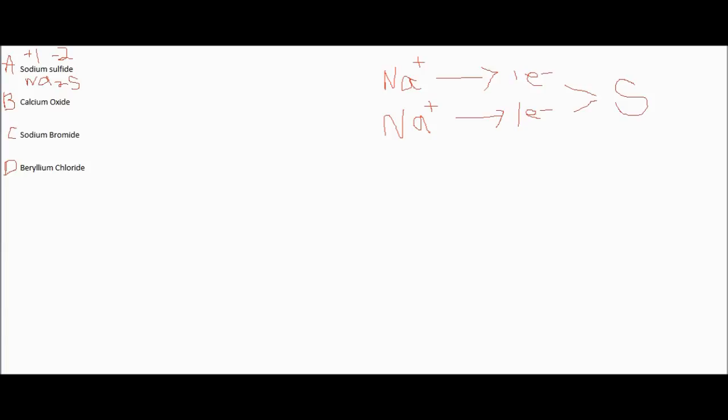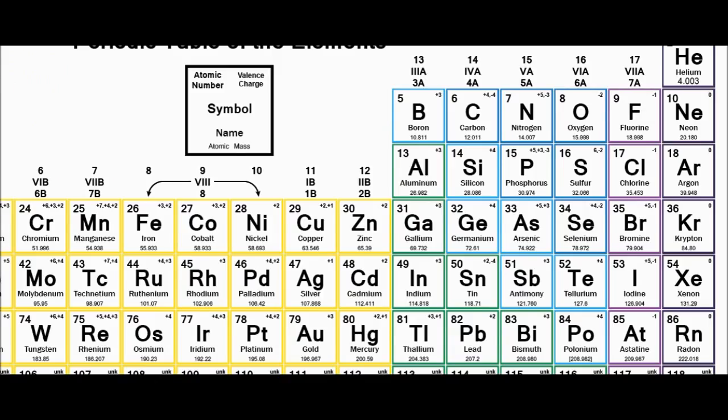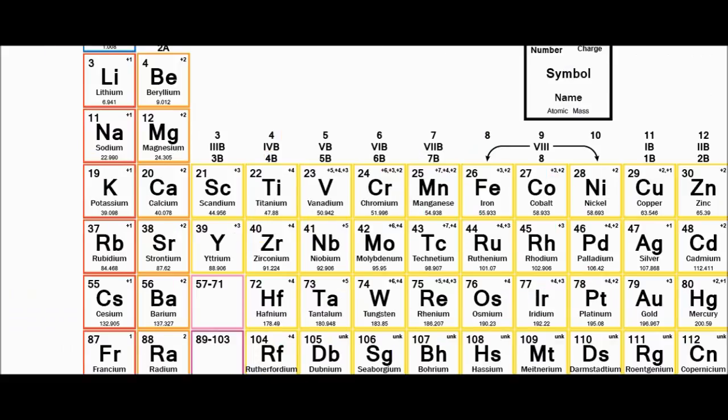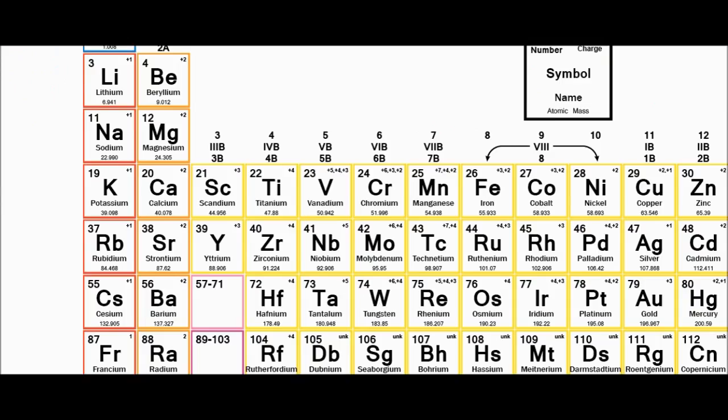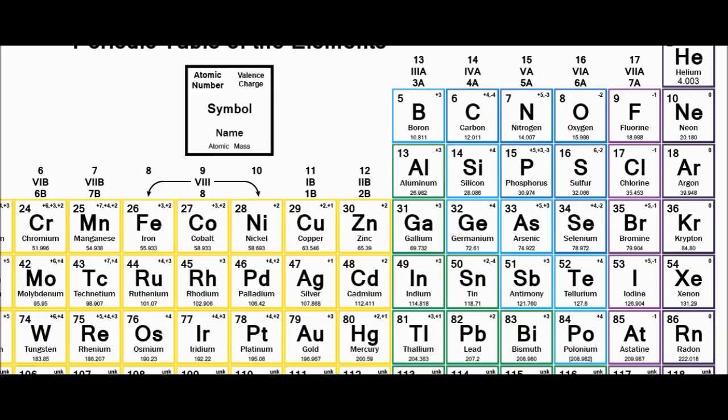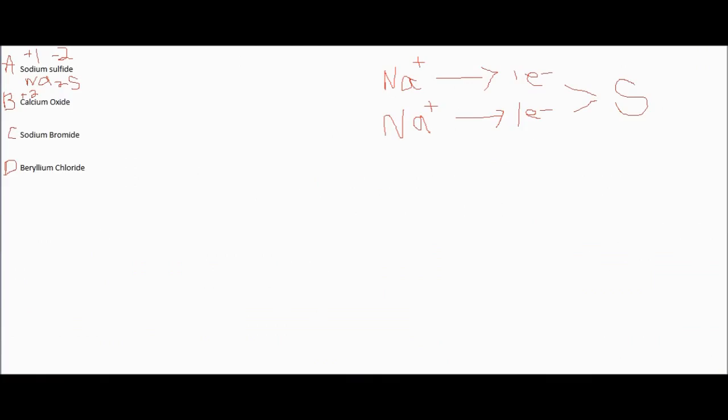Then we have calcium oxide, and we'll look at our periodic table. Calcium has a charge of plus 2, and oxygen has a charge of negative 2. We can see right away, to balance these, all you'd have to do is have one of each.